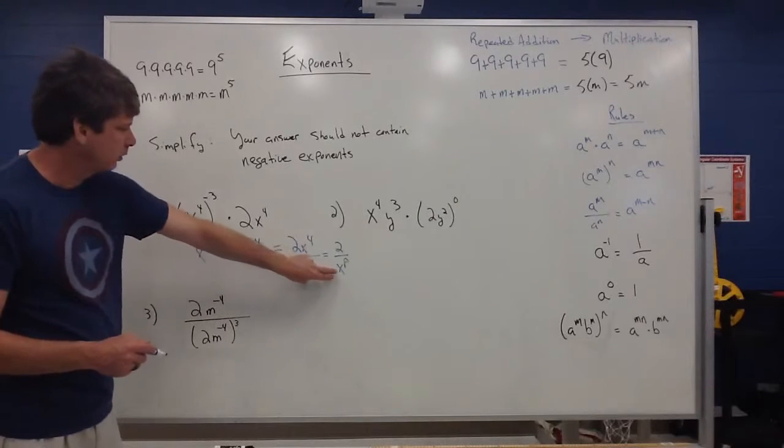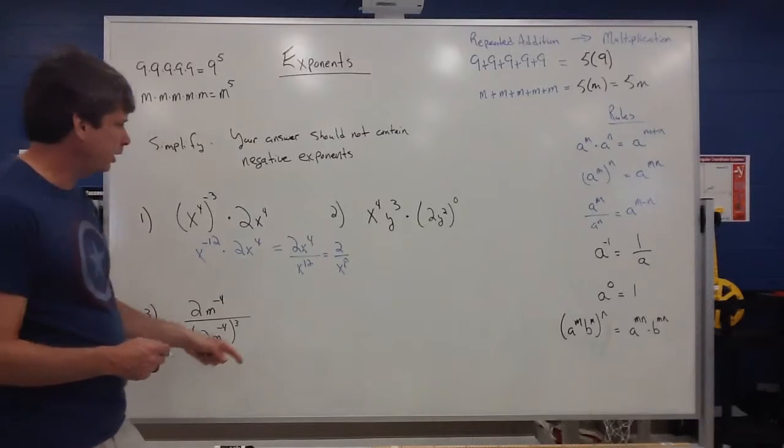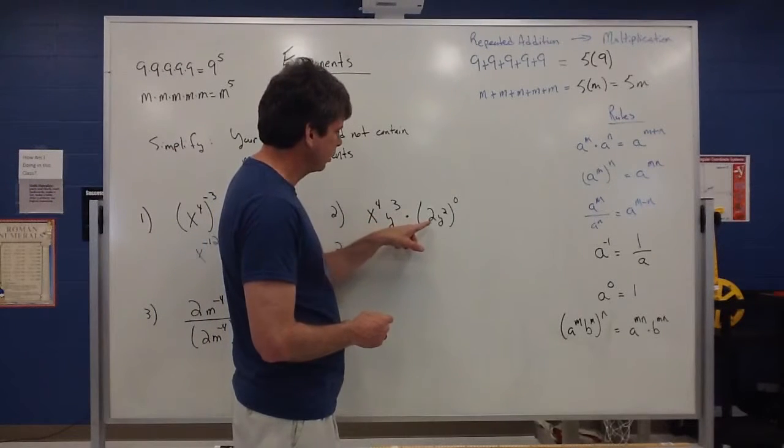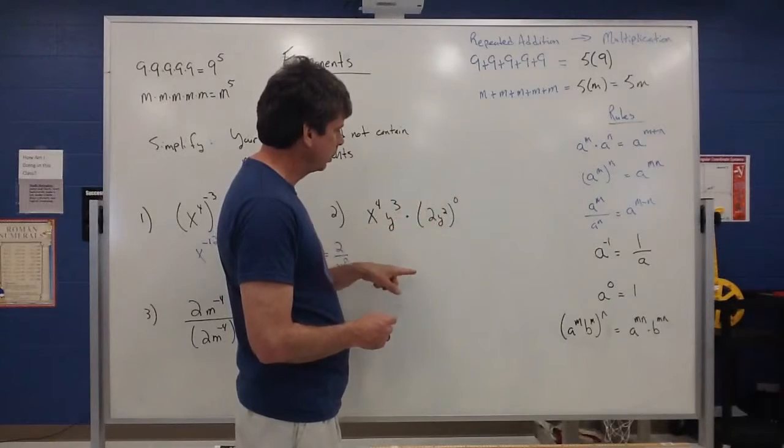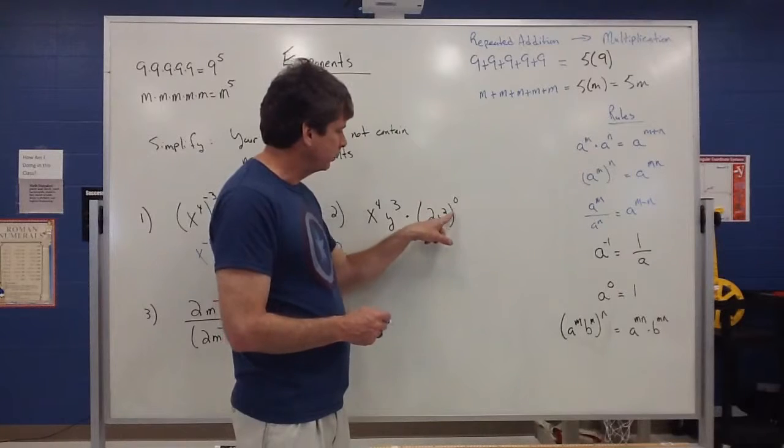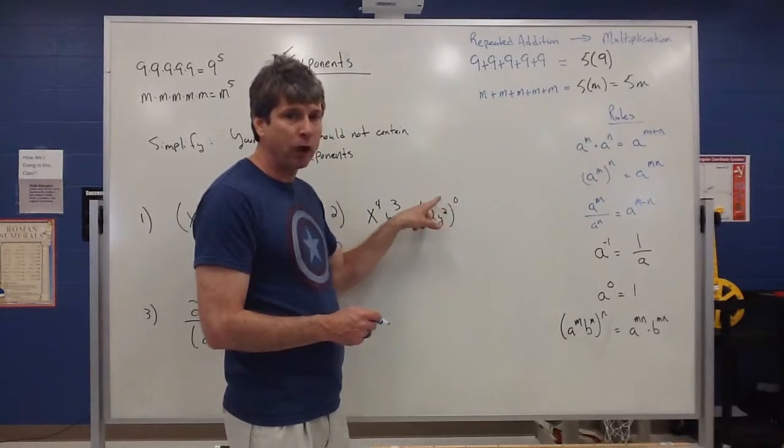So these simplify to an x to the eighth and it goes on the bottom. Next example I have x times y cubed times 2 times y squared raised to the zero power. We do pick up on that anything raised to the zero power turns into a one.